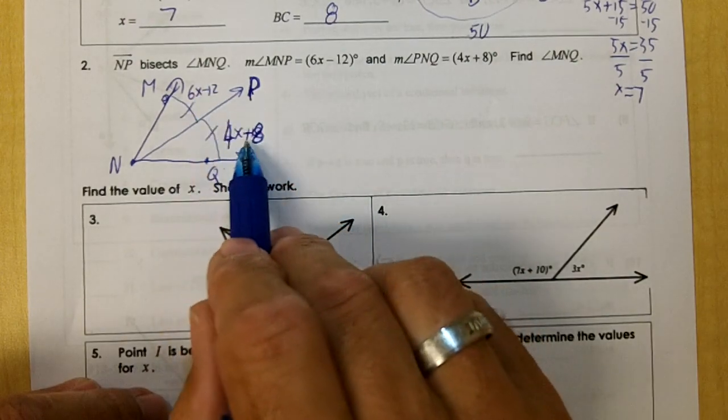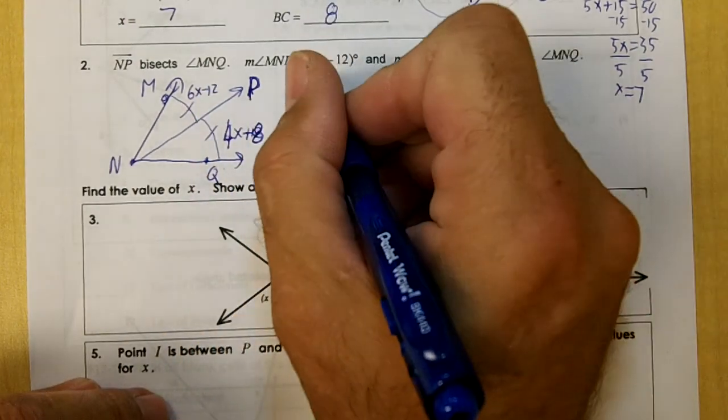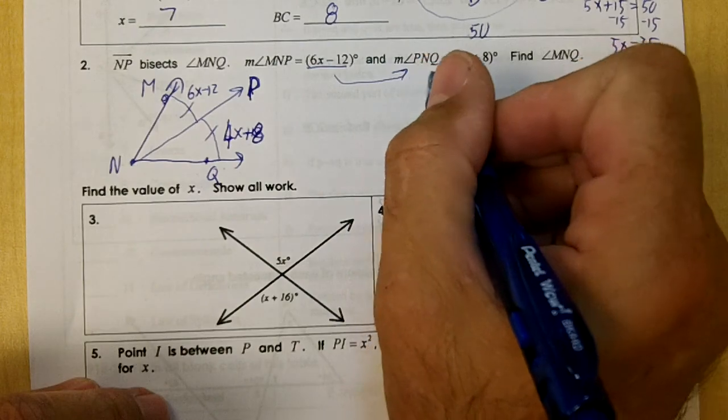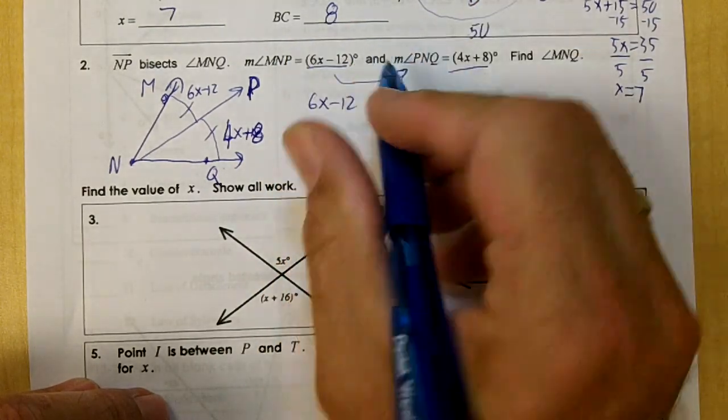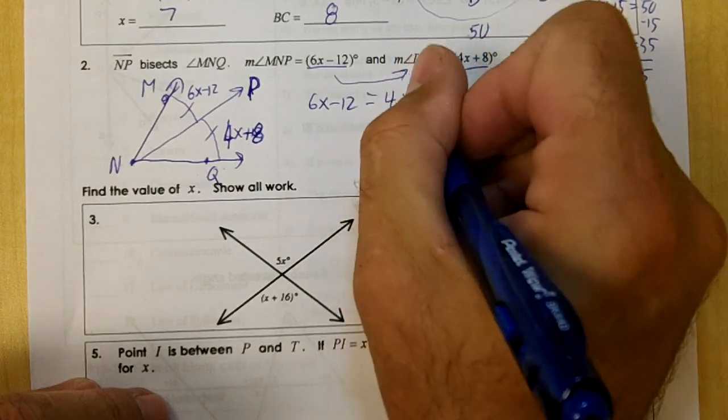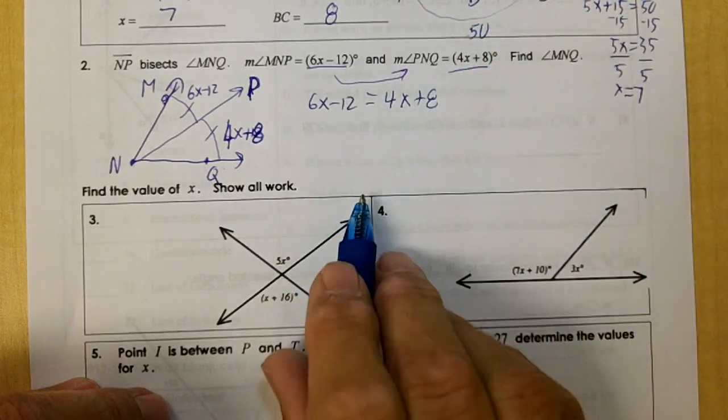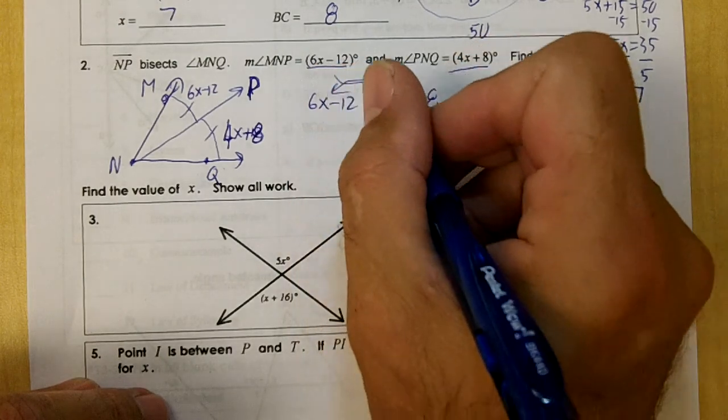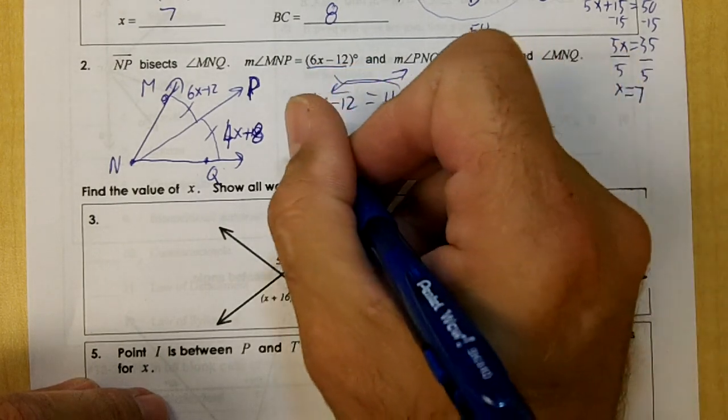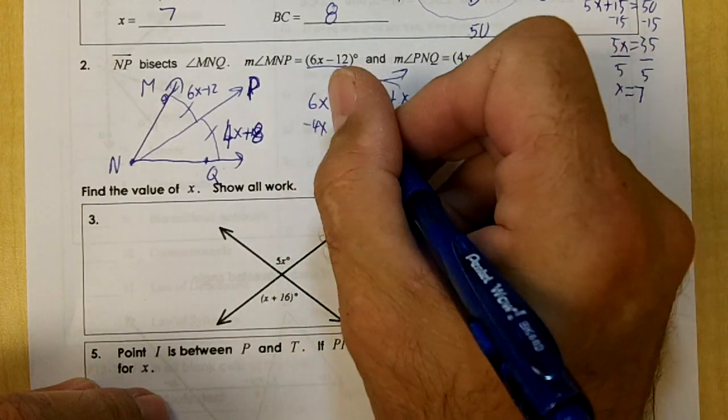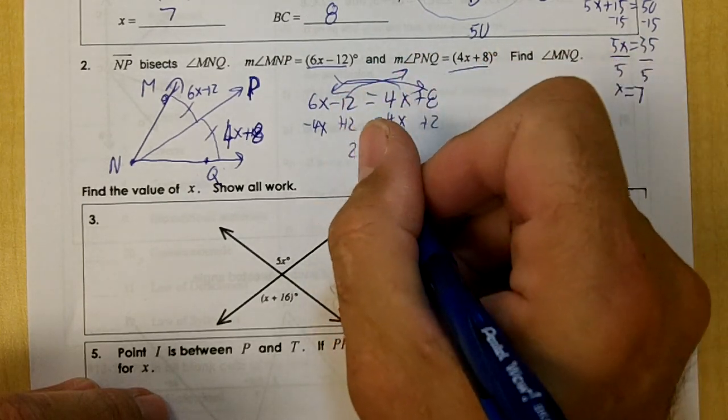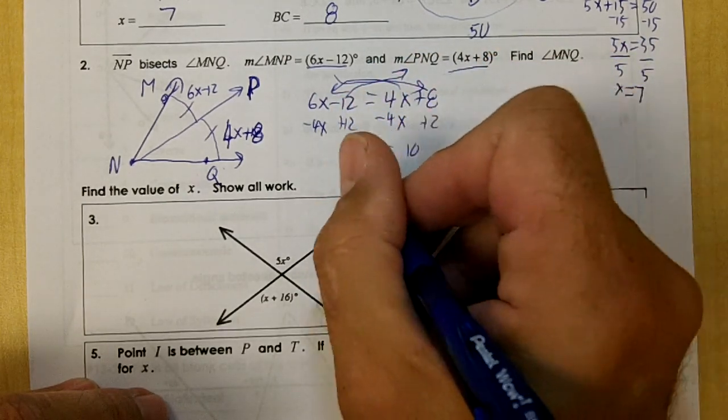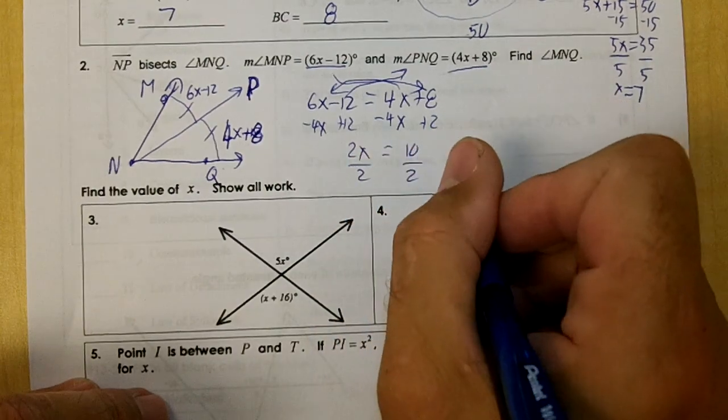So we know that this is equal to this. We're going to have 6X minus 12 equals 4X plus 8. We're going to move the X to the left and the 12 to the right. So we'll have 2X equals 10. Divide by 2, and we get X equals 5.